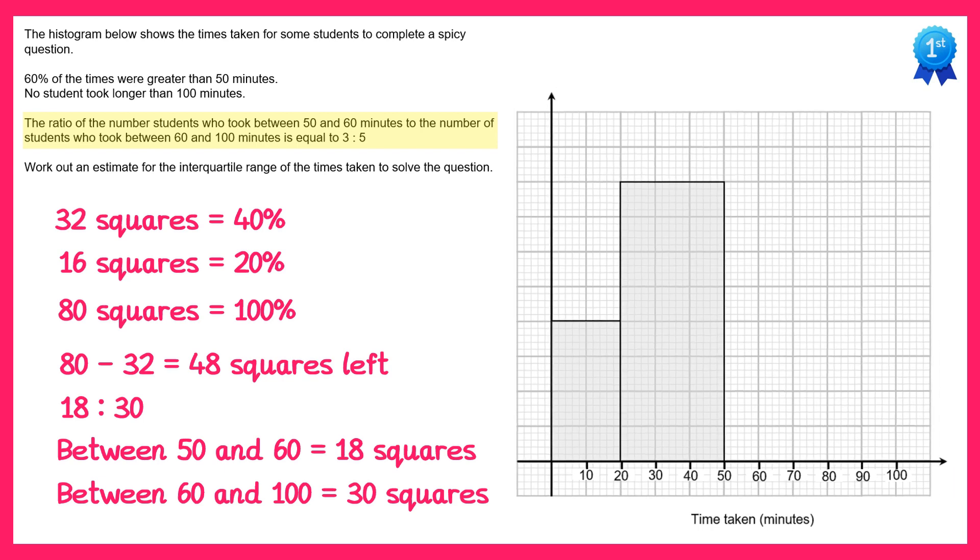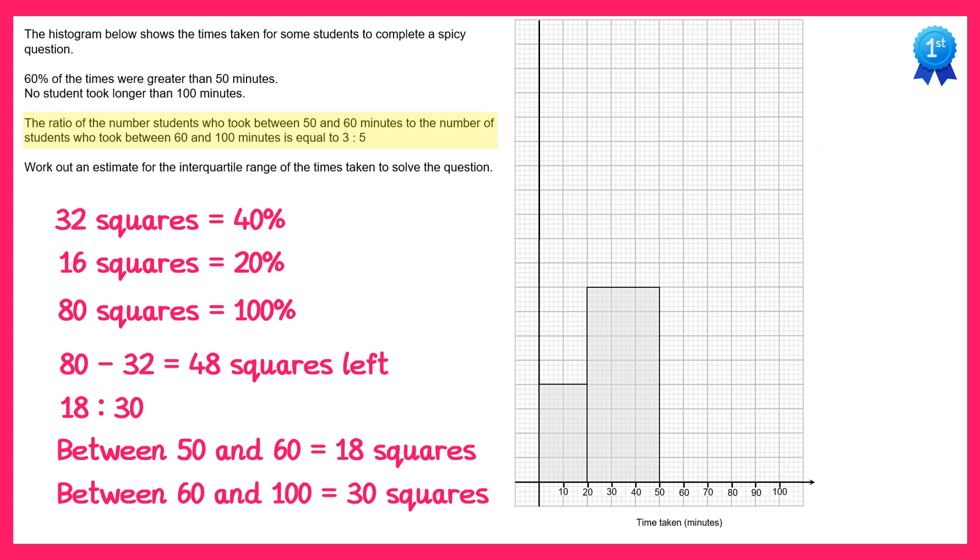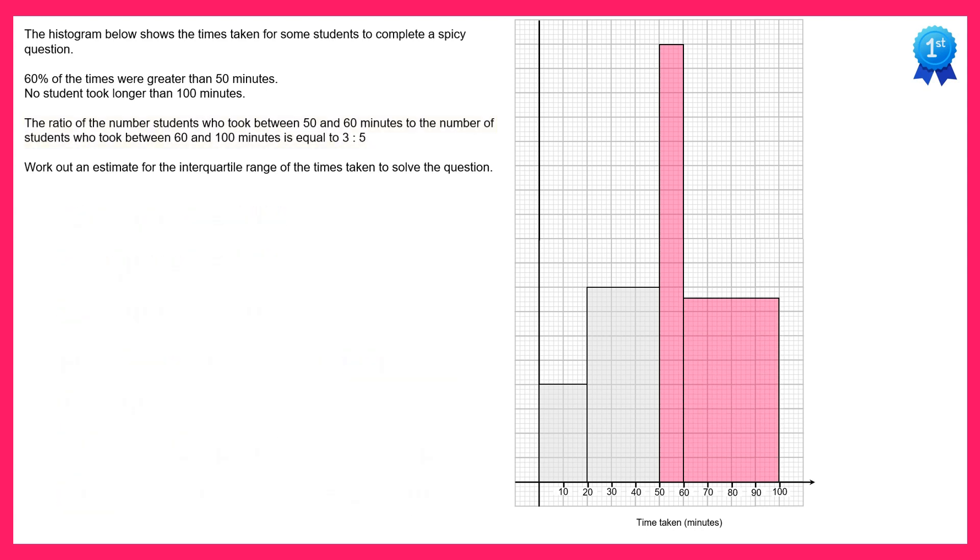Now if we're going to do this we'll need to have a much longer y-axis. Between 50 and 60 we need 18 squares. The width of this bar is only going to be one square so we need to go up 18 squares so it's a really tall bar. Then from 60 to 100 we need 30 squares. The width of this is 4 squares so 30 divided by 4 is 7 and a half, so we need to go up 7 and a half squares. This is the completed histogram.